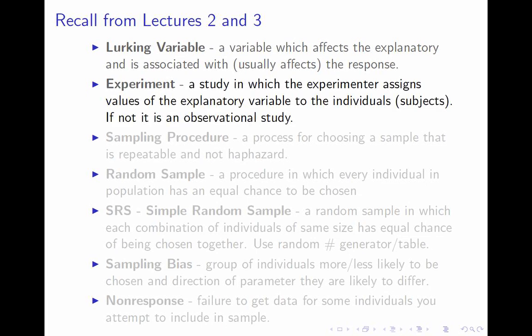The only long-term solution is an experiment. An experiment is a study in which the experimenter assigns values of the explanatory variable randomly to the subjects. Anything that's not an experiment is an observational study. Because the experimenter is randomly setting the value of the explanatory variable, no other variables can affect it — that's why it eliminates lurking variables.